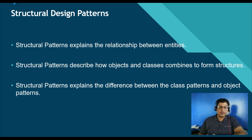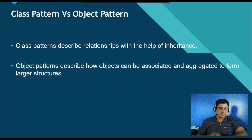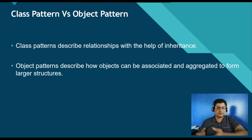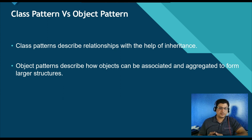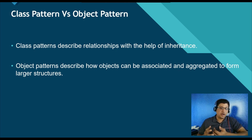Structural design pattern describes how objects and classes combine to form structures. Structural patterns also explain the difference between class patterns and object patterns. Class patterns describe relationships and structure with the help of inheritance, whereas object patterns describe how objects can be associated and aggregated to form a large structure. In simple terms, class patterns tell how inheritance can be used to provide more useful interfaces, while object patterns describe how objects can be composed into larger structures using object composition.